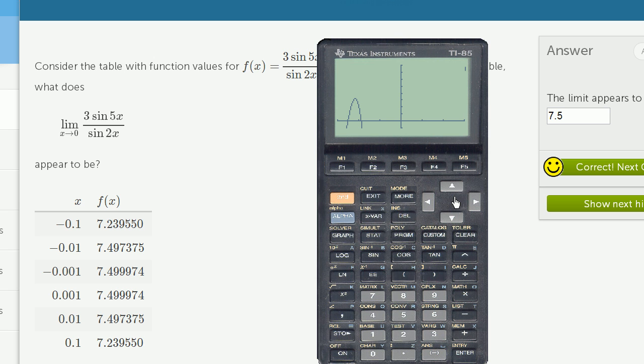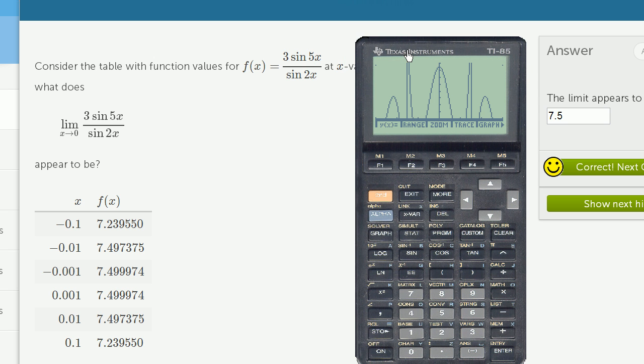Let's see what it does. The graph is doing all sorts of neat things, but as we get closer and closer to zero, as x approaches zero from the negative direction, we see the function is approaching 7.5. Likewise, when x is getting closer to zero from the positive direction, the function seems to be approaching 7.5. The function isn't defined at 7.5, but it's clear that when you approach from both sides, you're getting there.